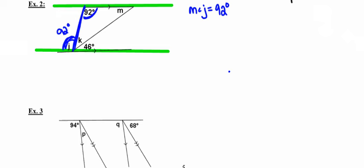There are no other obvious angle measures from the blue transversal, so I'll switch to the red transversal. Angle M and the 46-degree angle are alternate interior angles on parallel lines, so they have to be congruent as well. The measure of angle M must be equal to 46 degrees.